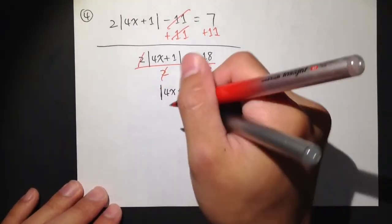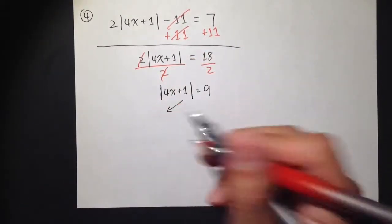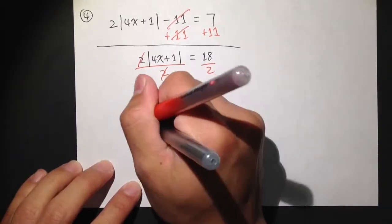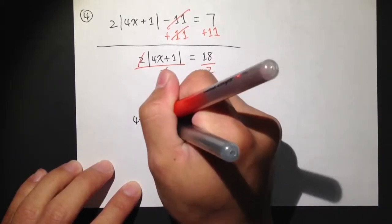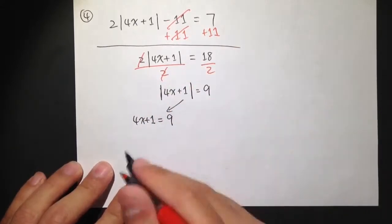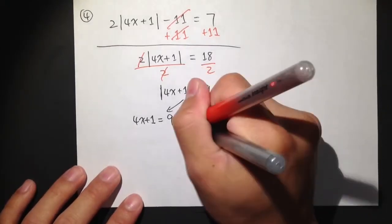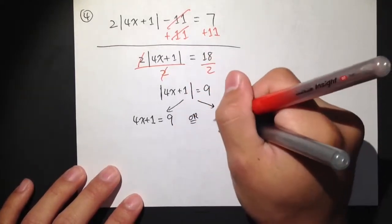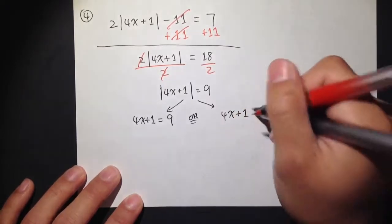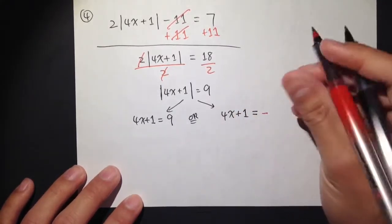Now we isolate the absolute value and break it apart into two cases. First case: the inside stays the same, so 4x plus 1 is equal to 9. Second case: take out the absolute value, the inside stays the same as 4x plus 1, but set it equal to negative 9 instead.